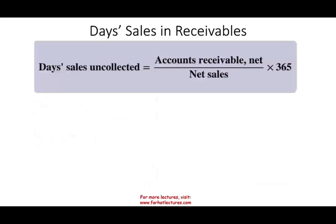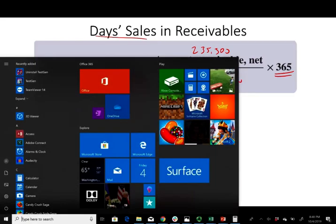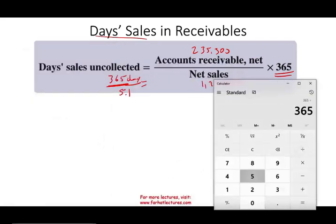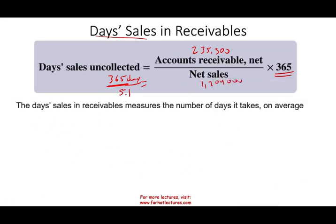Another related ratio is days sales in receivable, sometimes called days sales in collected. One way to compute it is: receivable of $235,300 divided by net sales of $1.2 million, multiplied by 365. Another way is simply 365 divided by the turnover of 5.1, which gives us 71 days. This measures the number of days it takes on average to collect your money. You want this number to be as low as possible.